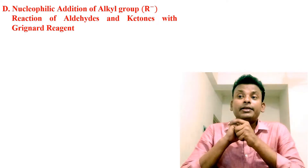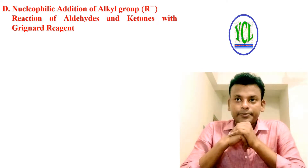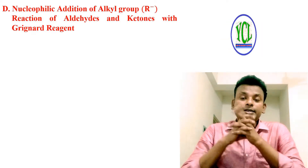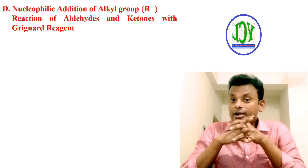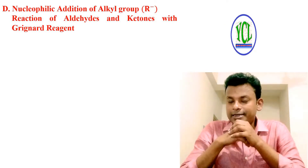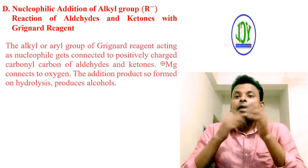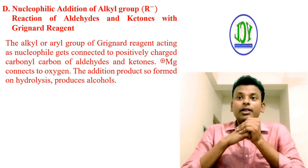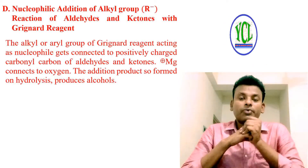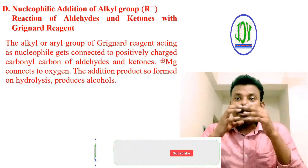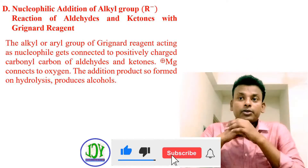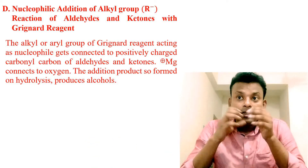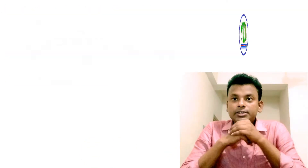The addition of an alkyl group — that is, the reaction of aldehydes and ketones with Grignard reagent: the alkyl group of the Grignard reagent is negatively charged, that is R⁻ or CH₃⁻. The alkyl or aryl group of the Grignard reagent acts as a nucleophile and gets connected to the positively charged carbonyl carbon of the aldehyde or ketone. The Mg⁺ connects to the oxygen to form an addition product, and on acid hydrolysis the product gives an alcohol. This is the mechanism.